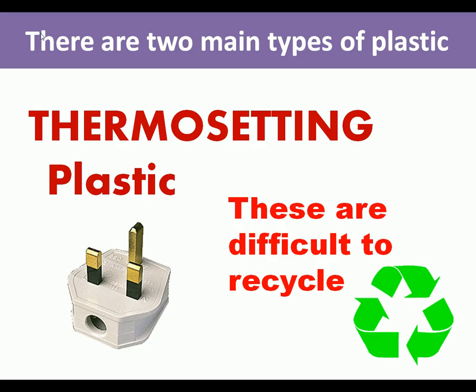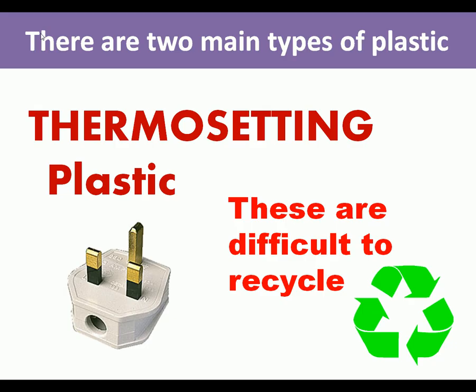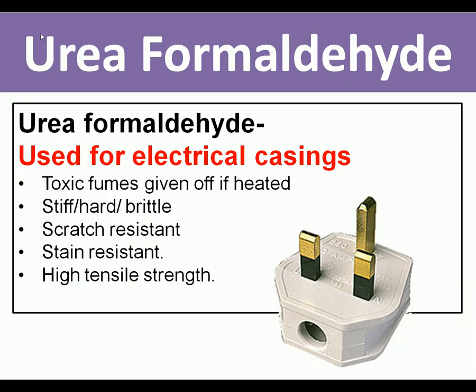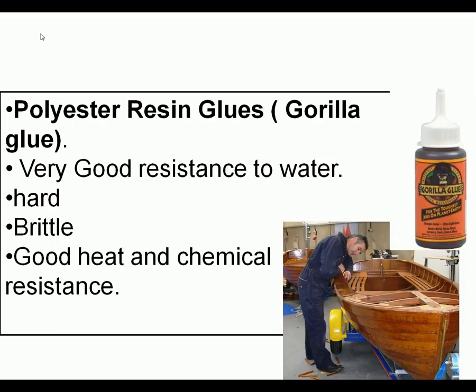The two thermosetting plastics we're going to look at are urea formaldehyde and polyester resin. Urea formaldehyde is used for electrical casings; if heated it gives off toxic fumes, it's quite brittle and will crack, but it's scratch and stain resistant and quite strong. It's generally used for plugs and electrical sockets because it stays rigid if it heats up.